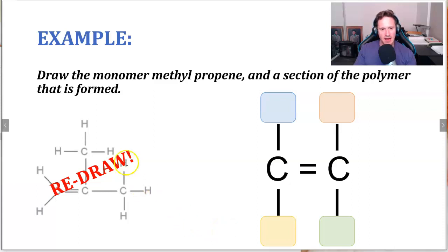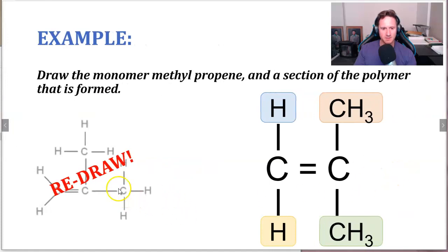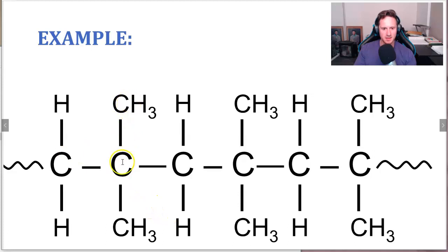Now an example question you can try — pause the video and give it a go. Draw the monomer methylpropene. You've got a methyl functional group and it's propene — one, two, three — with a carbon-carbon double bond because it's an alkene. Redraw this into the standard format with the double bond at the top, then place the substituents below. The answer has two methyl substituents on the sides. Once you've drawn the monomer, it's much easier to turn it into a polymer — the double bond disappears and you've got single chains. The repeating unit has one methyl and one hydrogen with square brackets.